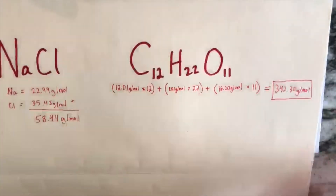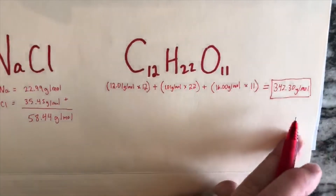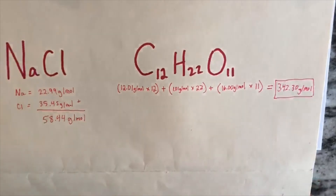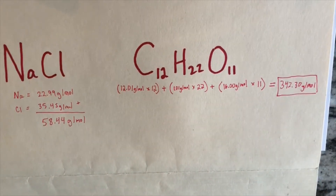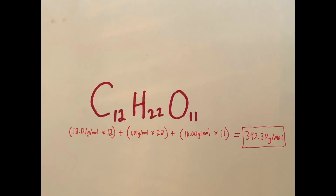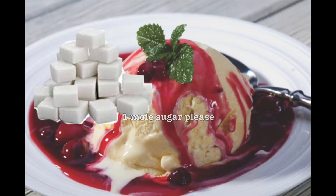That is the molar mass — a.k.a. what one mole of sucrose weighs — 342.30 grams per mole. So you might be like, hey Mom, I need one mole of sucrose on my cherries jubilee. She'll be like, okay, you're about done now. One more of these questions and you're grounded.